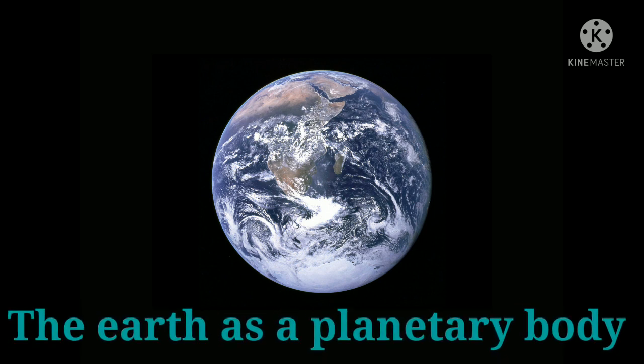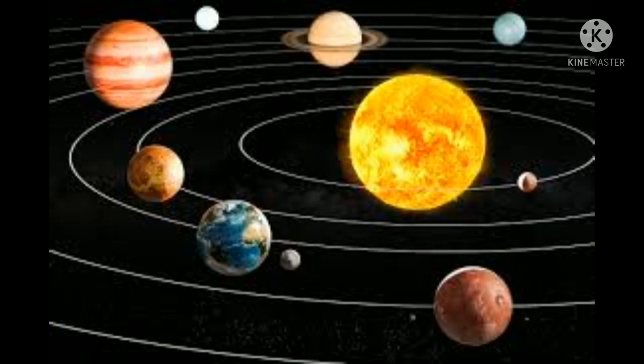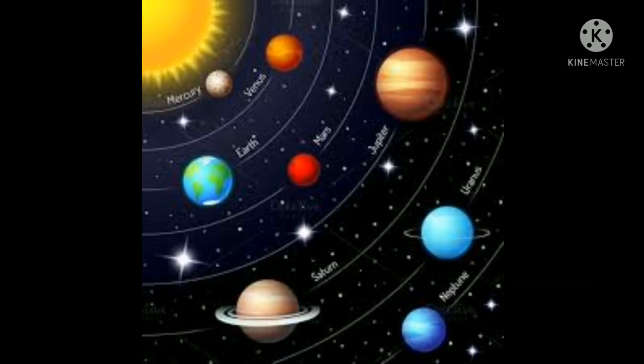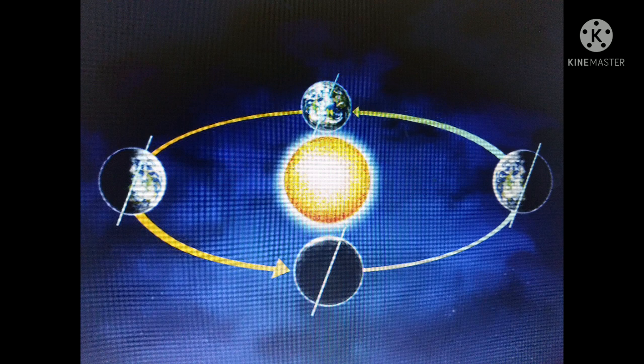Let us understand the Earth as a planetary body. In our solar system, there are eight planets: Mercury, Venus, Earth, Mars, Jupiter, Saturn, Uranus and Neptune. These planets rotate on their axis and also revolve around the Sun. Every planet takes a certain period of time for completion of its rotation and revolution. In this picture, the Earth rotates itself and at the same time it revolves around the Sun.